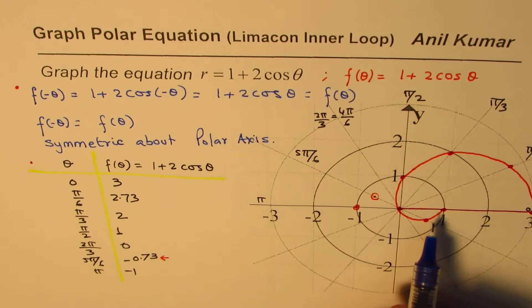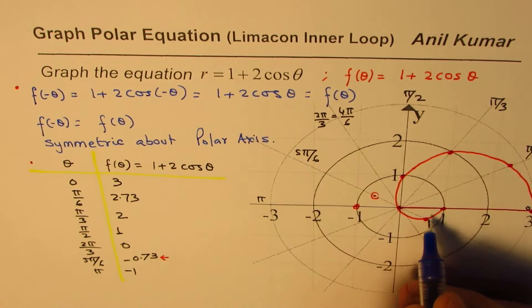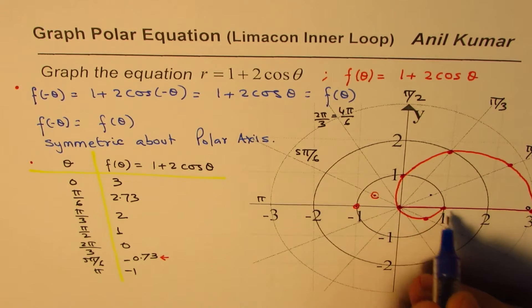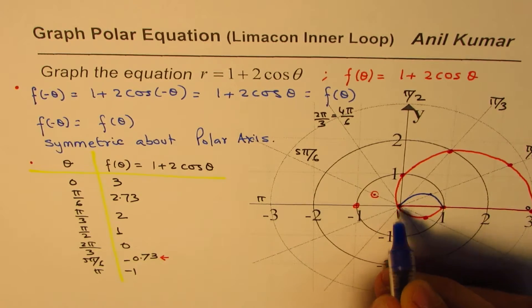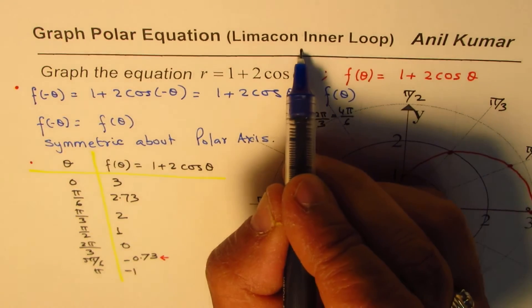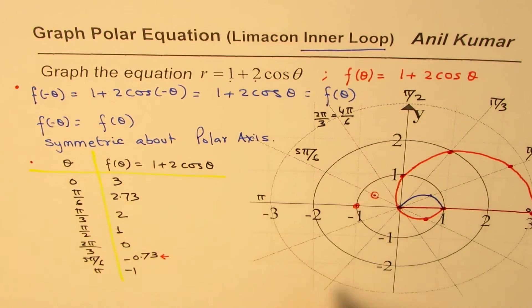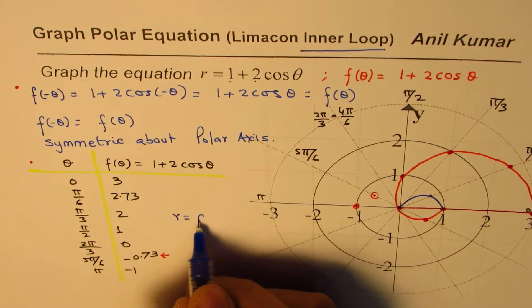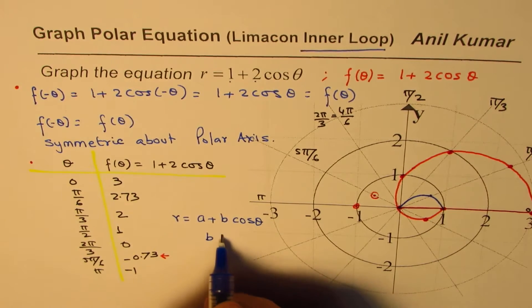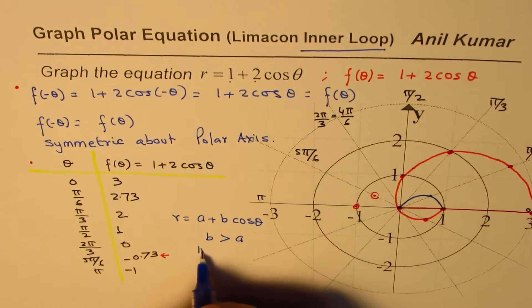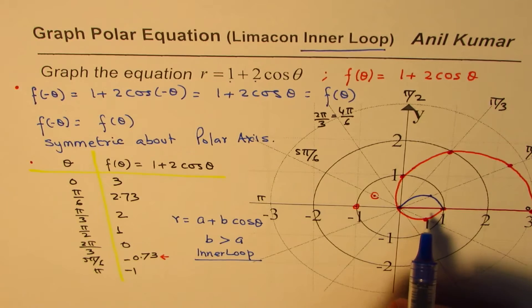Now, we know it is symmetric about the polar axis. So we'll take each point as its reflection. So if I have the reflection, you see this overlap. This is the reflection. So that is the overlap in a loop which we are talking about. So if this value is higher than that, that is to say, if I have r equals a plus b cos theta, where b is greater than a, then we get inner loop.